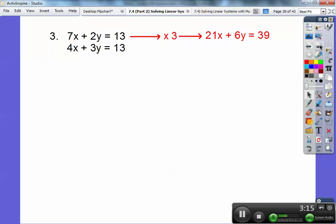So times 3, 21x plus 6y equals 39, and then times negative 2. This times negative 2 gets me negative 8x. This gives me a negative 6y. This gives me a negative 26, and I can add them together, and this red 6y and the blue negative 6y will cancel each other out. So you get 13x equals 13, so x equals 1.